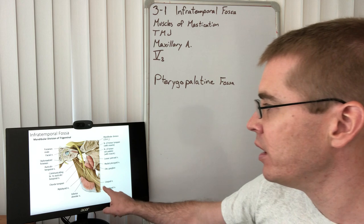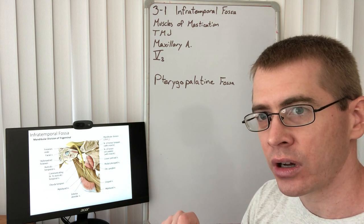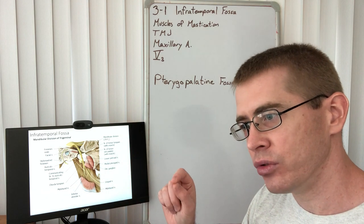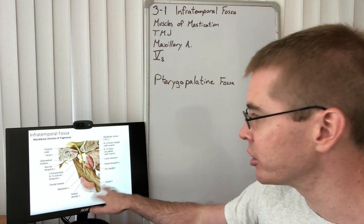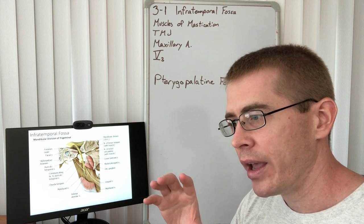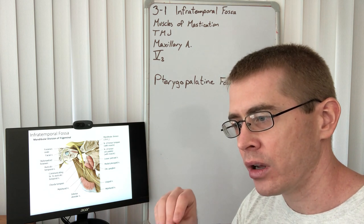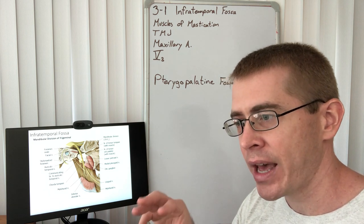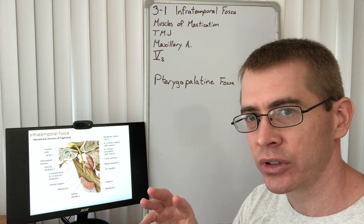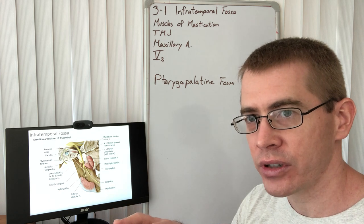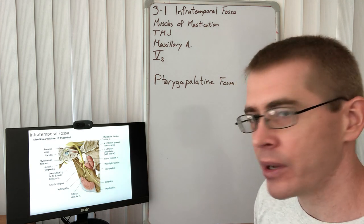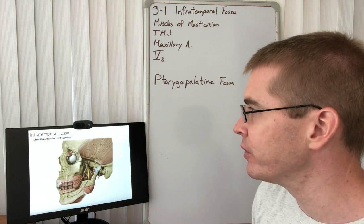Chorda tympani is going to do a number of things. Chorda tympani is going to innervate the submandibular ganglion, which isn't shown, and it's going to be the path for taste fibers, those SVA fibers from the anterior two-thirds of the tongue. We'll talk about that in more detail but just priming you for that.